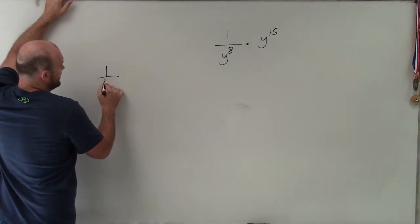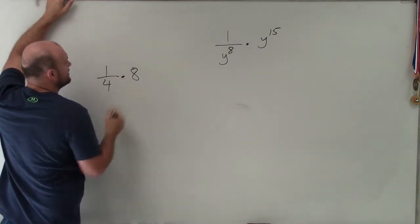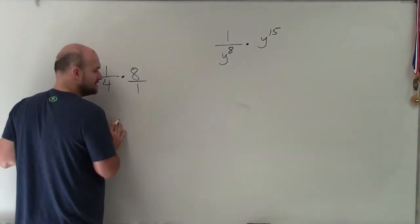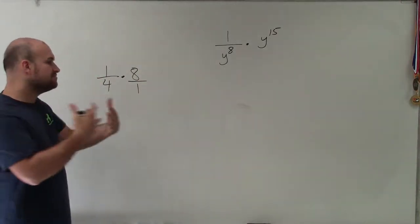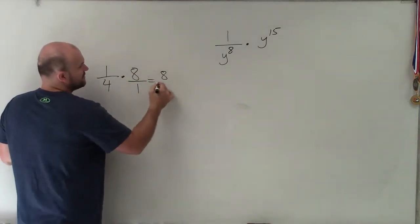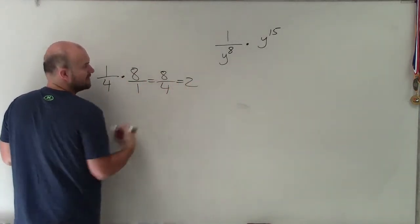So just think, if I had 1 fourth times 8, whenever we're multiplying a fraction times a whole number, what we want to do is convert your whole number to a fraction. Because when we multiply fractions, we just multiply across numerator times numerator, denominator times denominator. So therefore I get 8 over 4, which ends up equaling 2.